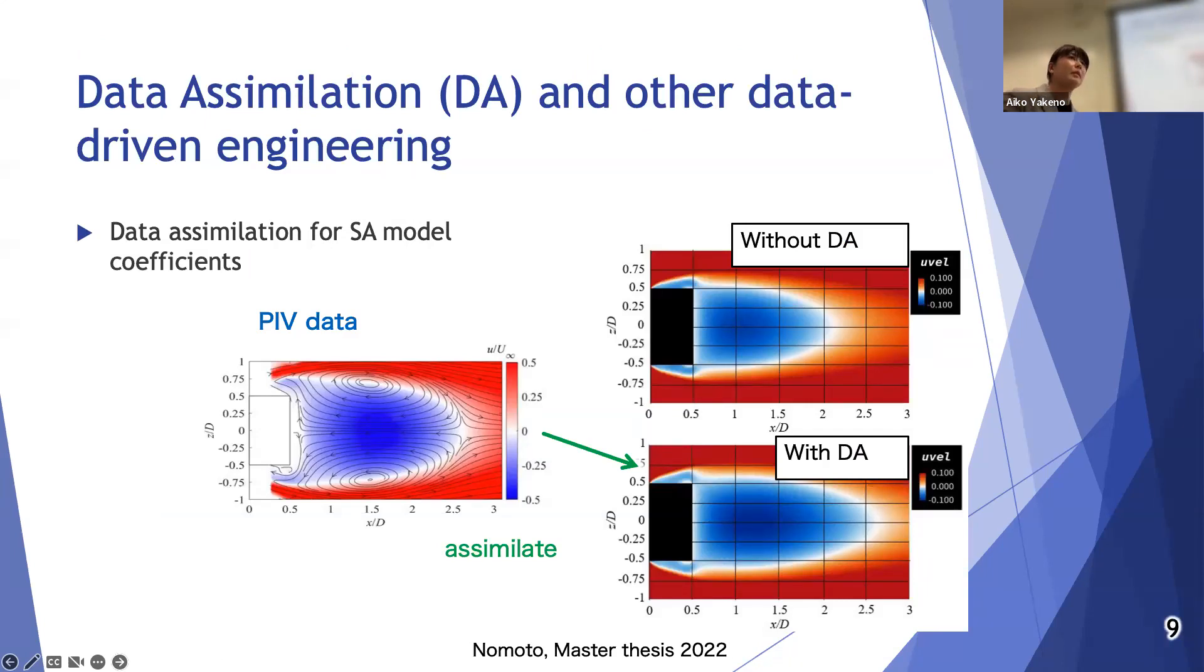What method do you use to change your coefficients? And do you do that as a kind of spatial field? And then you have spatially depending... Yeah. Details are not explained here, but we use the Kalman filter method. That is one of the typical methods for data assimilation.